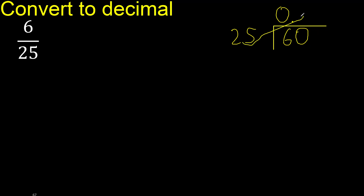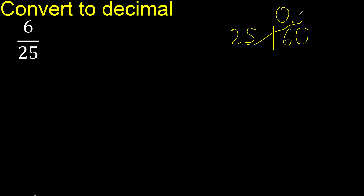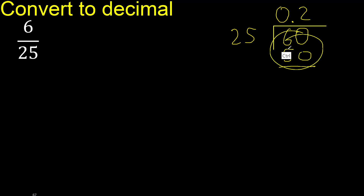25 multiplied by which number is nearest to 60 but not greater? 25 multiplied by 3 is 75, which is greater, therefore try another number. 25 multiplied by 2 is 50. Subtract: the remainder is 10. There is no number that goes down, therefore complete — always complete with 0 point.